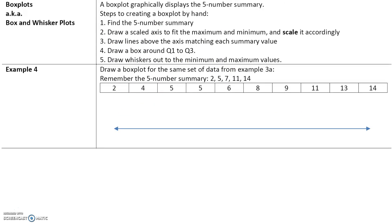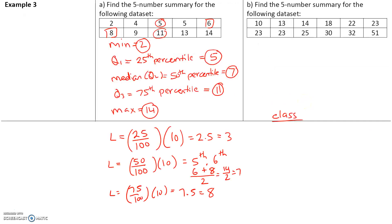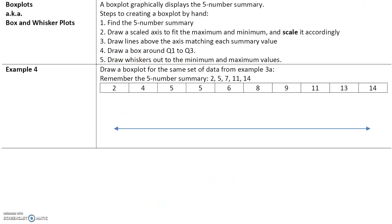Now let's take our five-number summary and create a box plot. Once you have the five-number summary, the rest is pretty easy. We draw a scaled axis to fit the minimum and maximum and scale it accordingly. For this data set — 2, 4, 5, 5, 6, 8, 9, 11, 13, 14 — the minimum is 2 and the maximum is 14, so we scale the axis by 2s: 2, 4, 6, 8, 10, 12, 14.